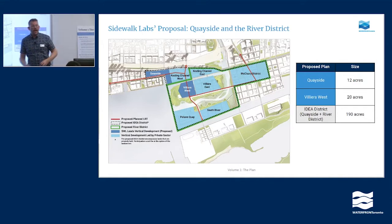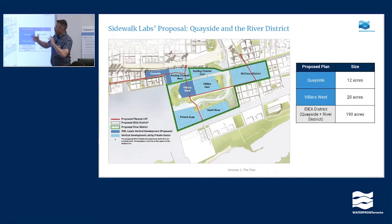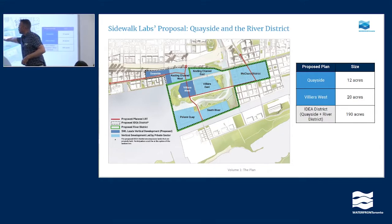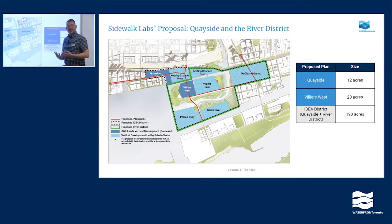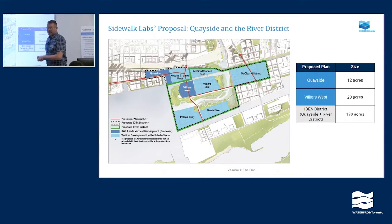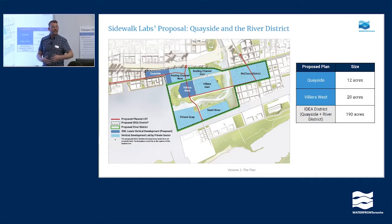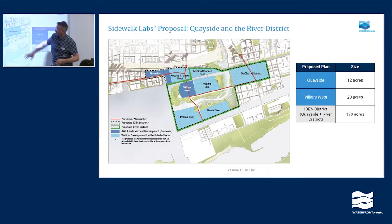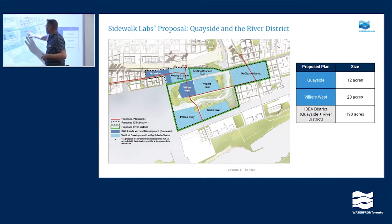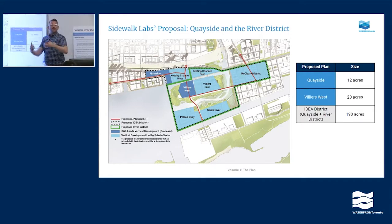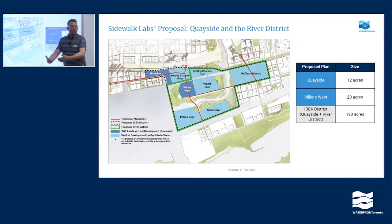If we scale out a little bit, we get to what's called the River District. Quayside is right here. The red line represents the planned light rail — the LRT — which is planned but not yet funded. The black dot outlines what Sidewalk Labs is calling the Idea District, a larger area where the innovations proposed in Quayside would be scaled up across the rest of the port lands. McCleary, South River, Poulson Key, and Villiers are all subject to future precinct plans that would be done as part of development in the future.